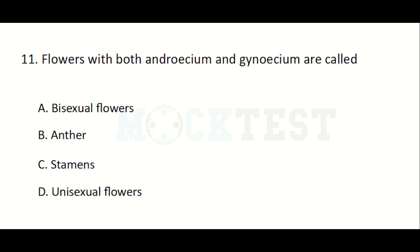Flowers with both androecium and gynoecium are called — Option A: Bisexual flowers, Option B: Anther, Option C: Stamens, Option D: Unisexual flowers. The answer is Bisexual flowers.